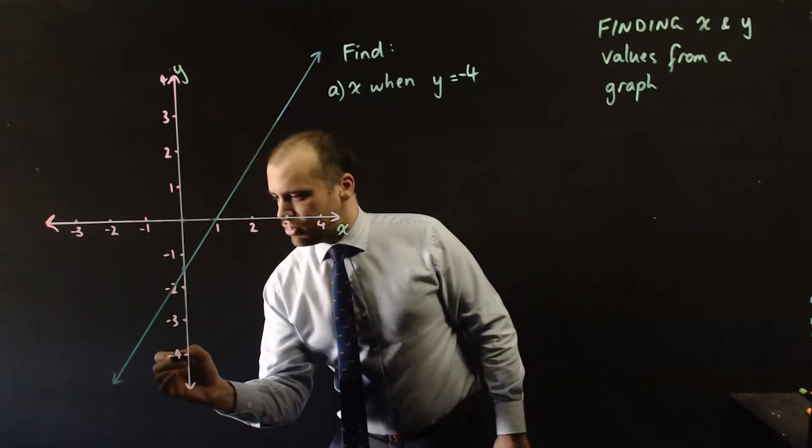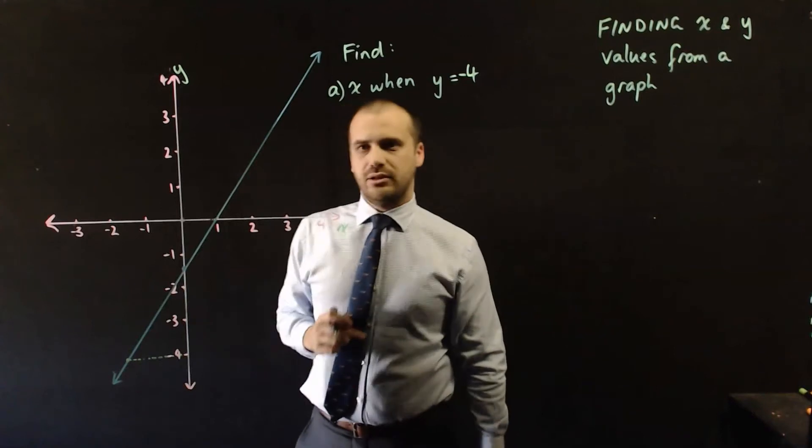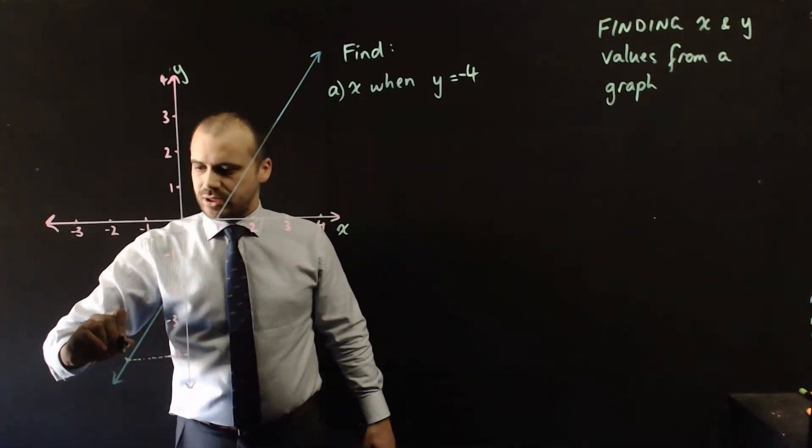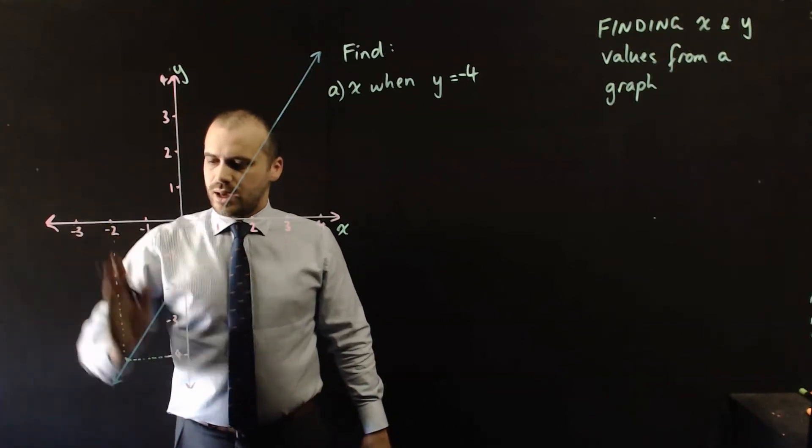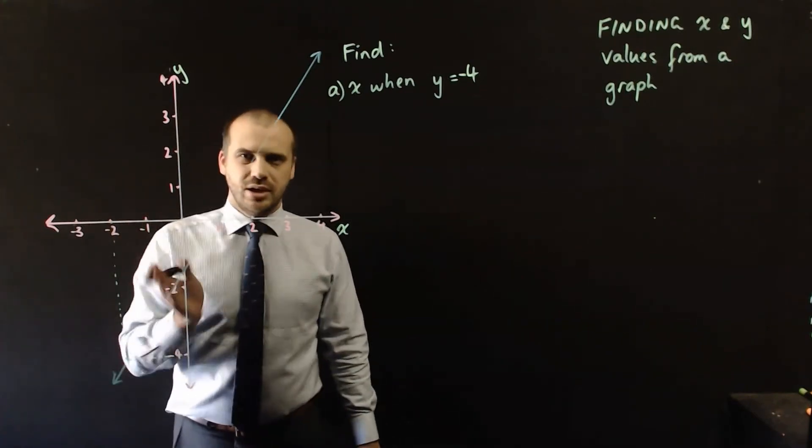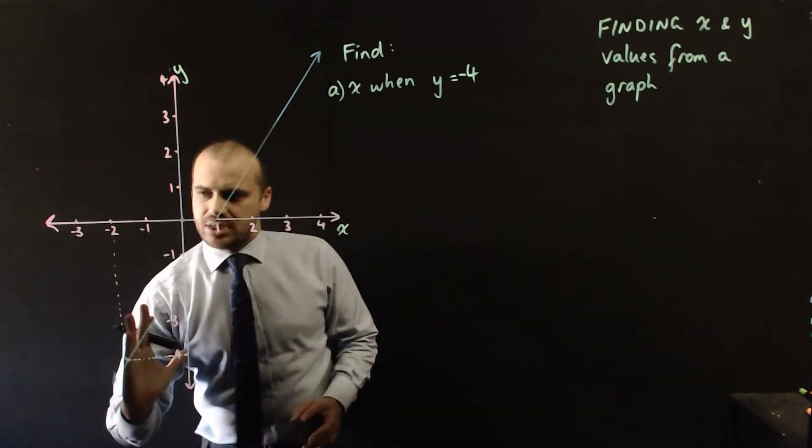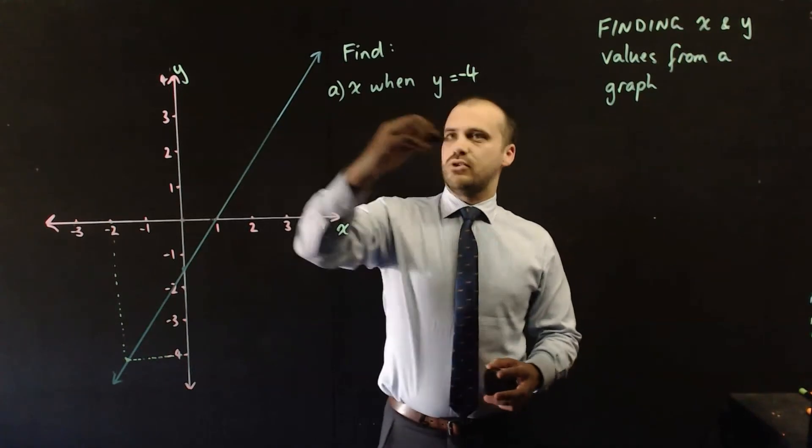So I can now draw a line from y equals negative 4 until I touch that line. And then I move up and see what my x value is at that point. And this line should be vertical and this line should be horizontal. You can see I'm a little bit wonky here. I'm not using a ruler. I'm not using graph paper. But straight across and straight up. And it looks like when y equals negative 4,